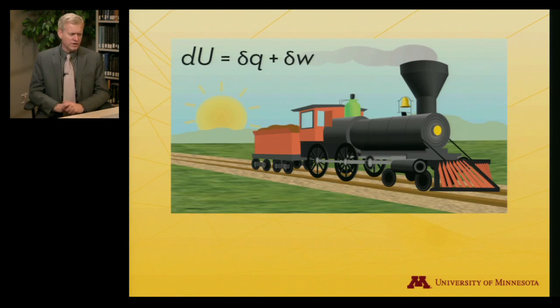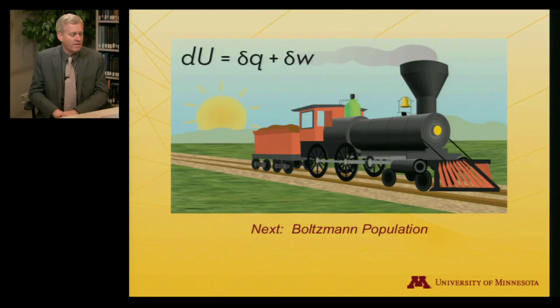The important thing to note is that the ratio dictated by our statistics shows an exponential dependence: the number of things at a given energy becomes smaller and smaller as the energy goes up, because of the form of that equation. We're going to work with that a little more in the next lecture, which will focus on Boltzmann population.